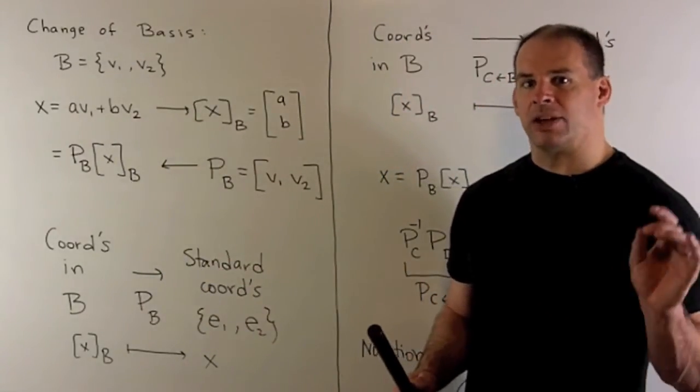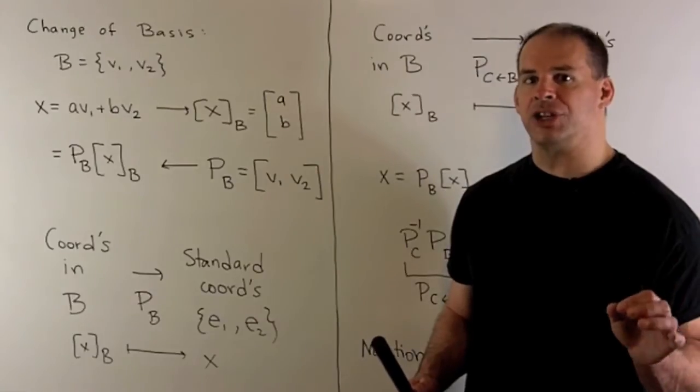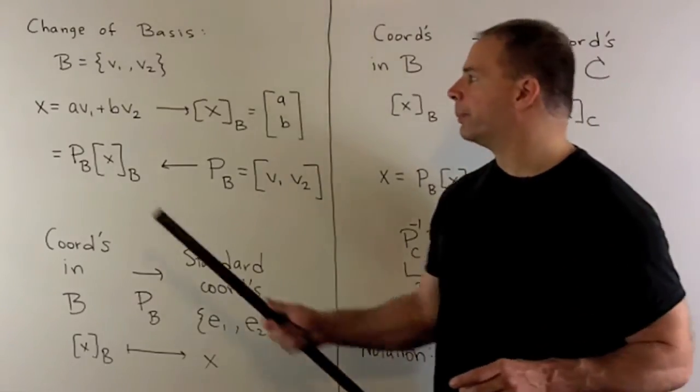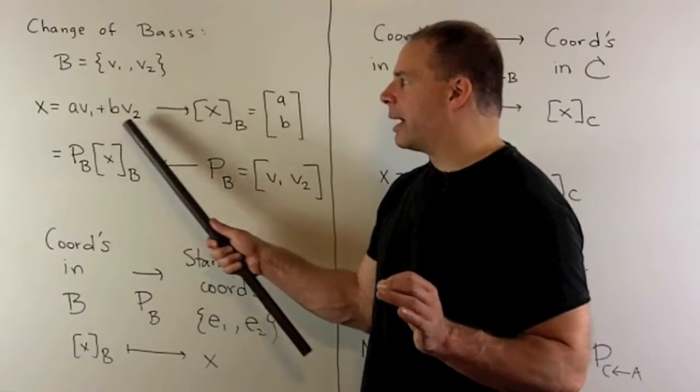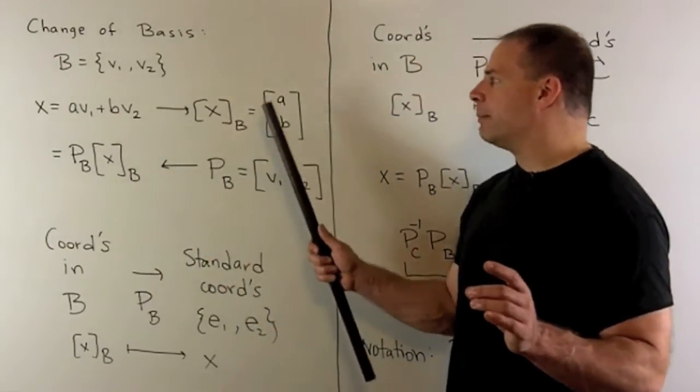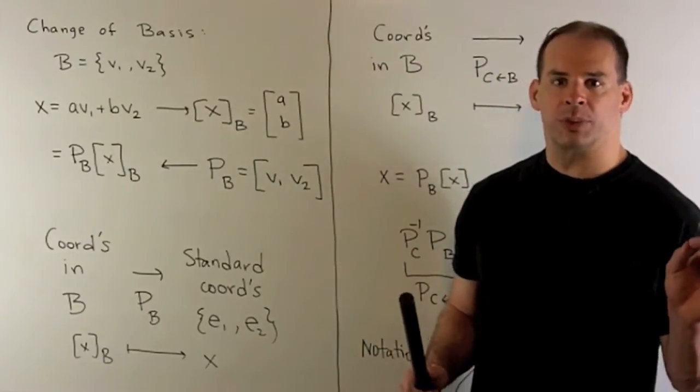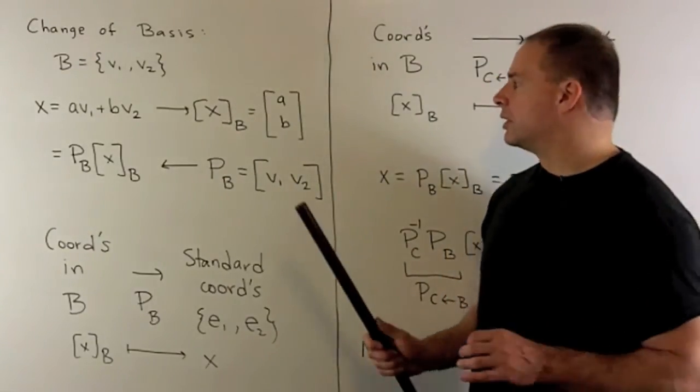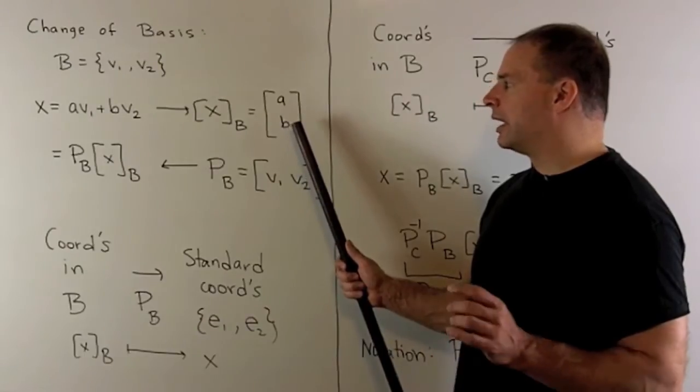Since I have a basis, I can rewrite X as a linear combination of V1 and V2. With this linear combination, we can peel off the coefficients. It's going to give me my coordinate vector for X with respect to B. So, we'll have the vector [a,b].